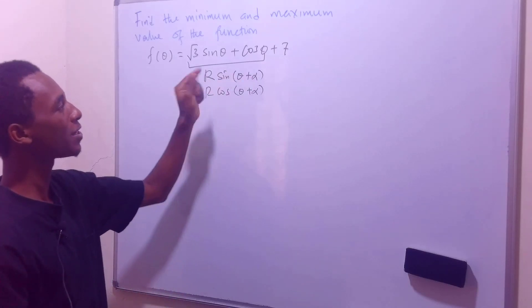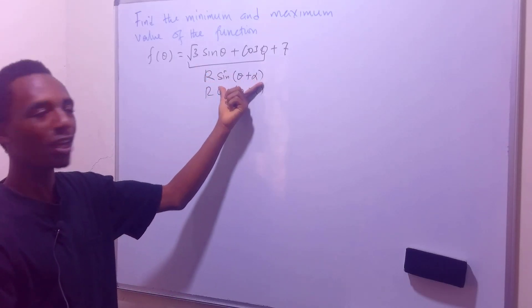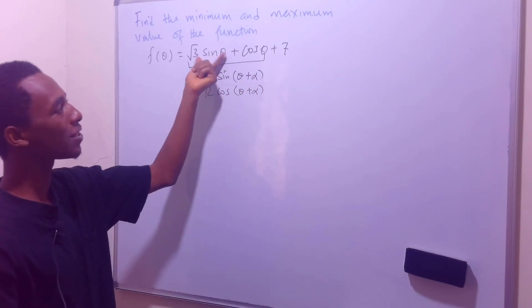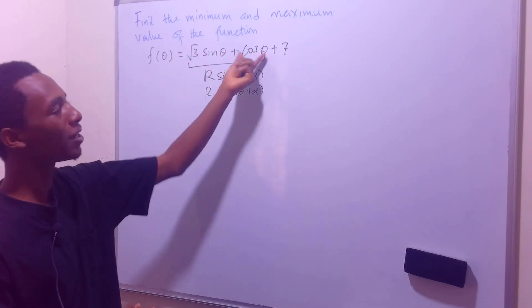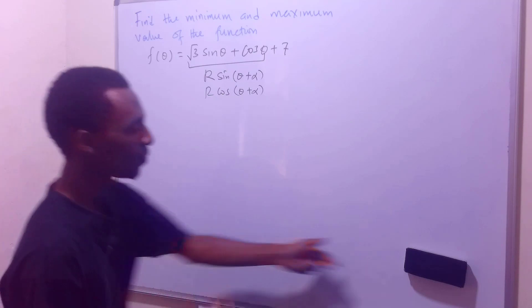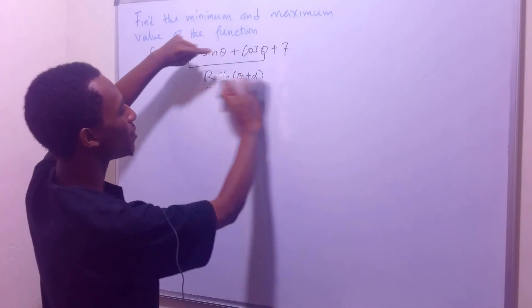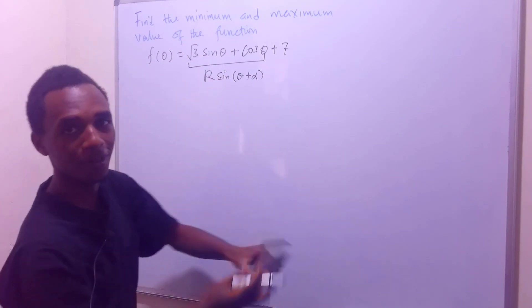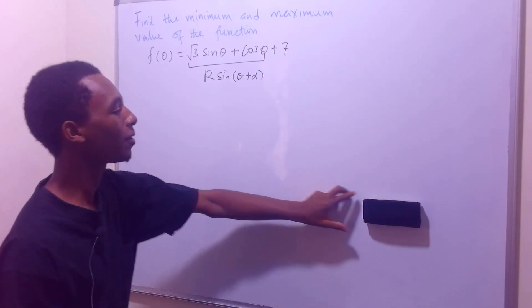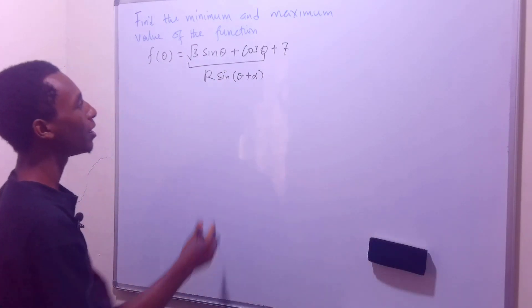But I think this works better here since the expansion of sin(θ + α) gives us sin(θ) somewhere and cos(θ). So we'll express this in form of r times sin(θ + α). Alpha is an arbitrary angle here. All right, let's go ahead and do that.